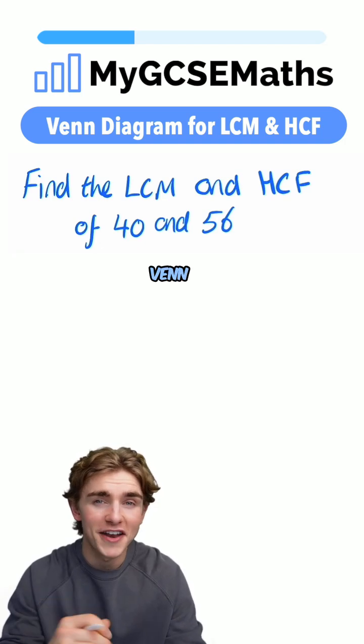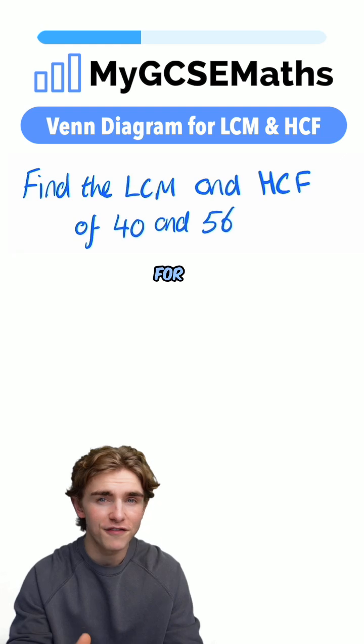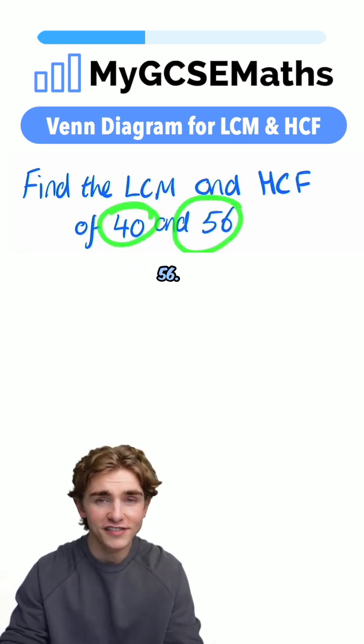The first step of our Venn Diagram Method is going to be to write out a factor tree for both of our numbers, 40 and 56. Let's do that now.